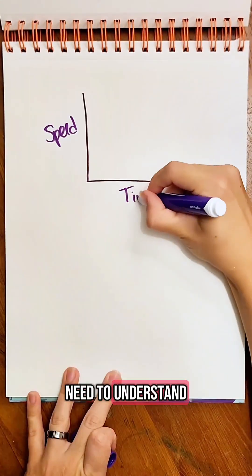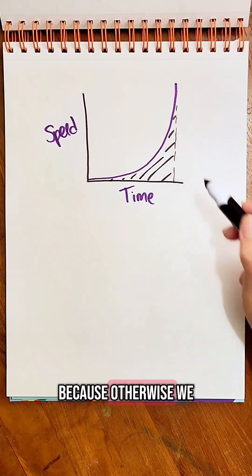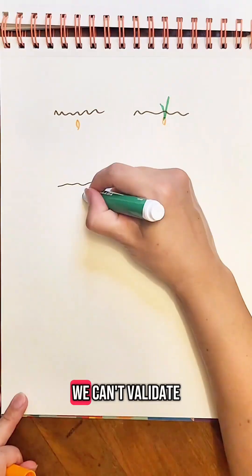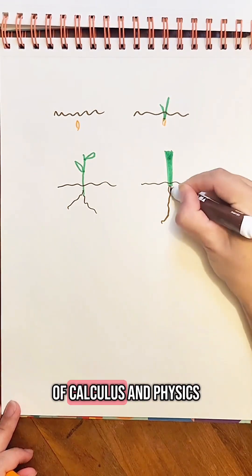As engineers, we need to understand the math behind computations that our design software performs because otherwise we can't question the results. We can't validate it according to our own fundamental understanding of calculus and physics.